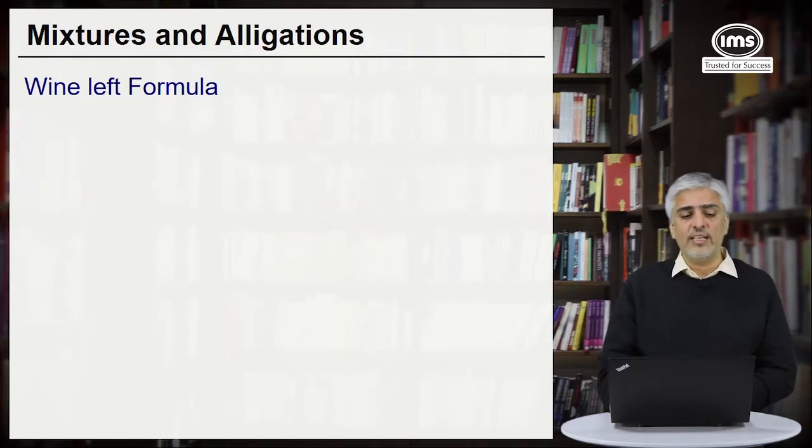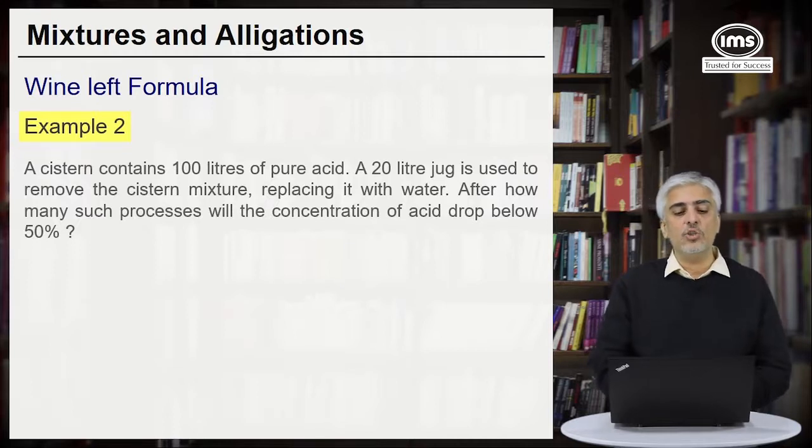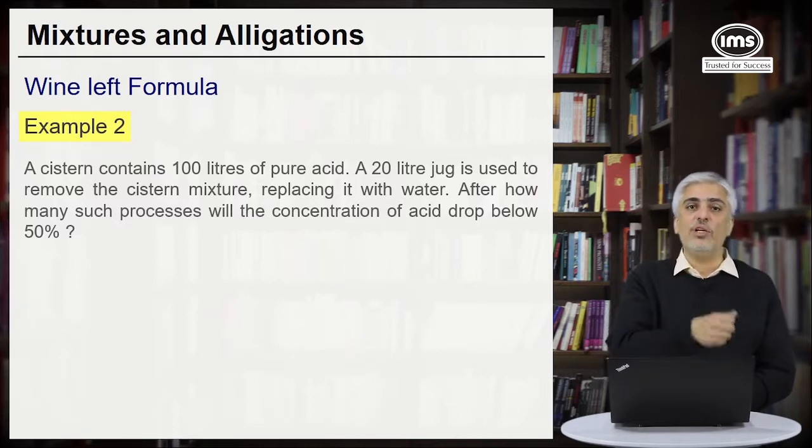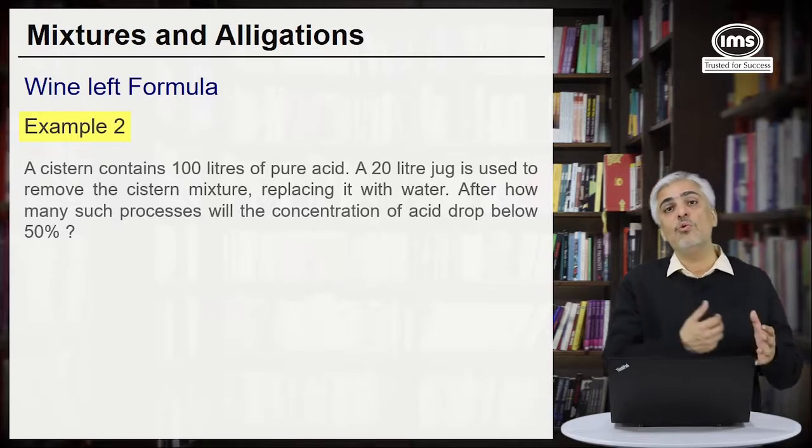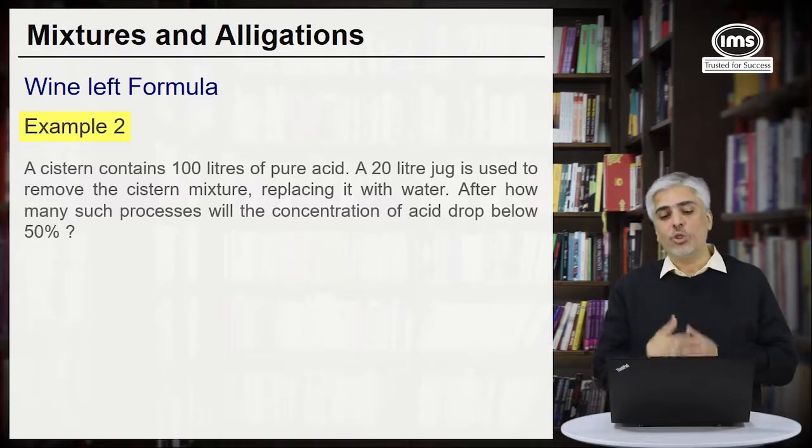Let us take one more example. A cistern, that is a cask again, contains 100 liters of pure acid. A 20 liter jug is used to remove the cistern mixture replacing it with water. So in the first case we are removing 20 liters putting water. Second case you again remove 20 liters but when you remove 20 liters in the second case you will remove some acid and some water also.